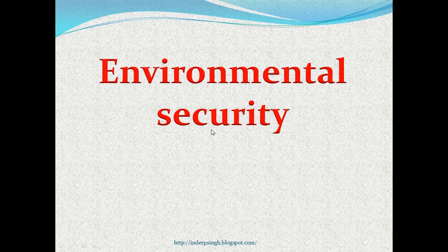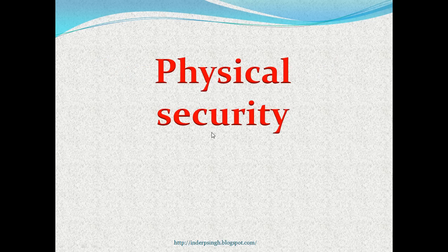Environmental Security. This means an optimum working environment for a system. A secure working environment includes correct ambient temperature, stable work platform and dust-free and dehumidified air. Physical security means the physical protection of an organization's information, for example gated access, security guards and access card required to enter the site.